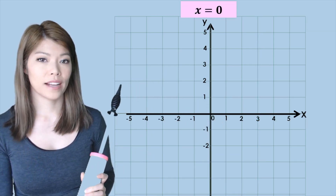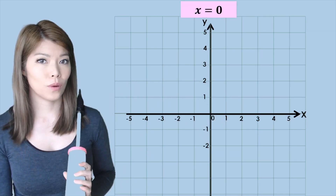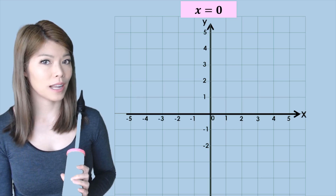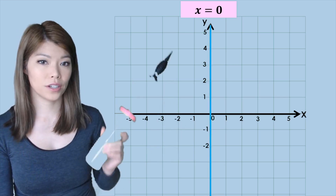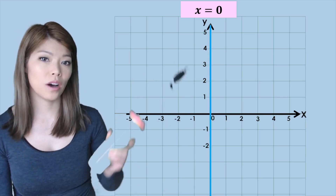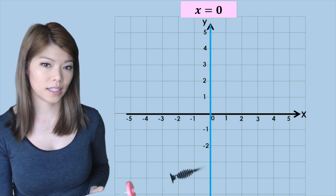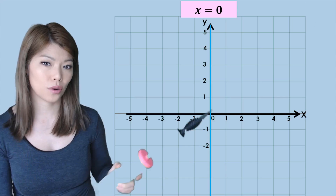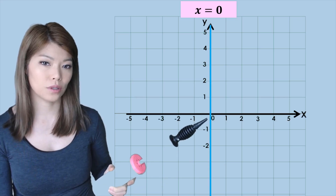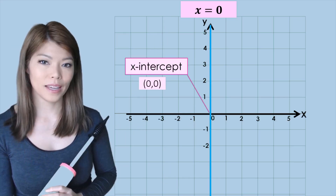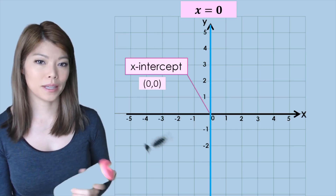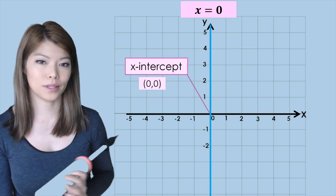For x equals 0, it would be a vertical line on the y-axis because it's going through x equals 0 all the time, and the x-intercept is 0, 0.